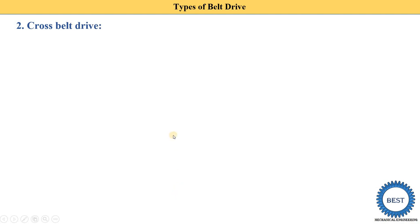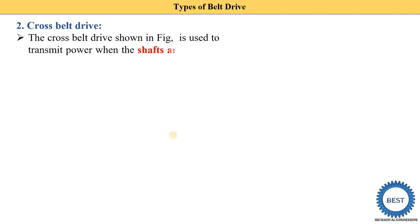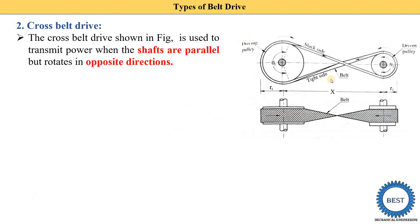The second type is the cross belt drive. In a cross belt drive the belt is fitted crossed, which is why it is named the cross belt drive. As shown in the diagram, the belt crosses like this.